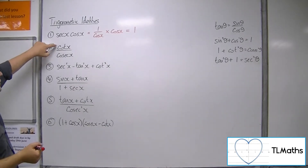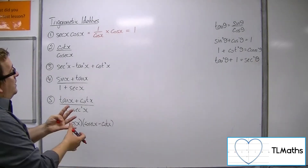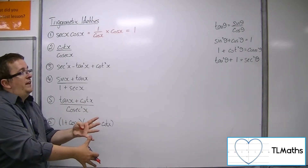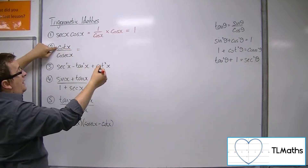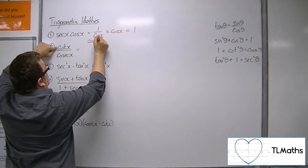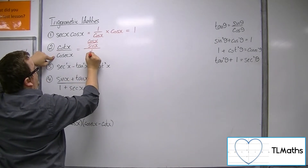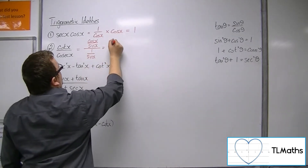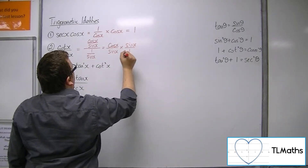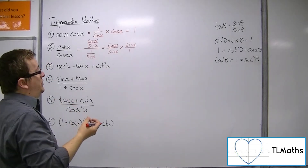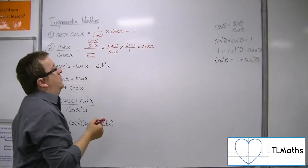For cot x over cosec x, as we progress through here, in a number of cases we're going to split trigonometric functions into their principal parts. So cot x, although it's 1 over tan, is also cos over sine. So cos over sine, over cosec which we know is 1 over sine. We have cos over sine times sine over 1, because dividing by a fraction is the same as multiplying by the reciprocal. The sines cancel, leaving us with cosine of x.